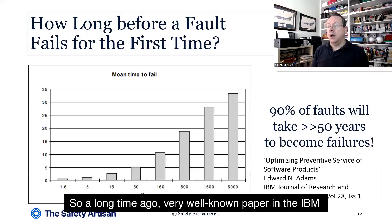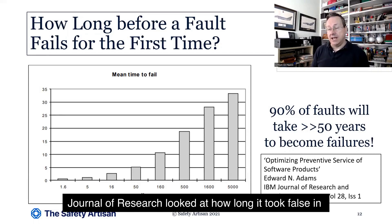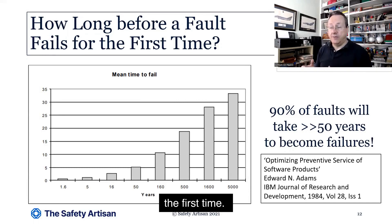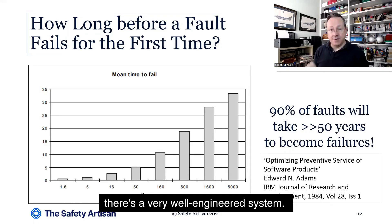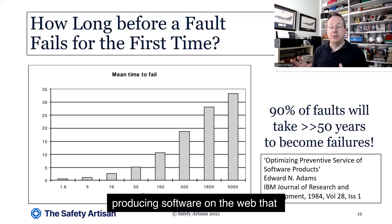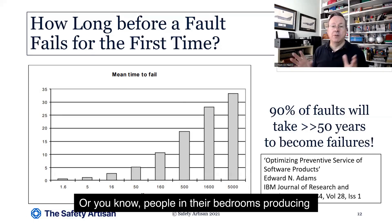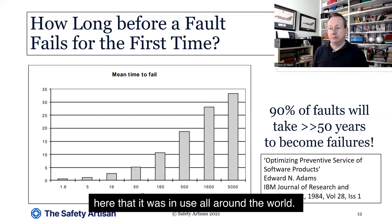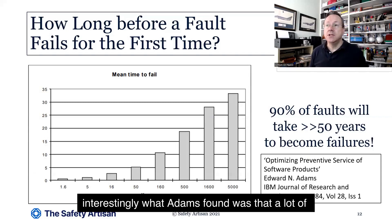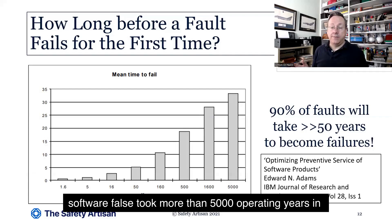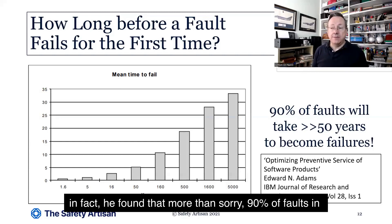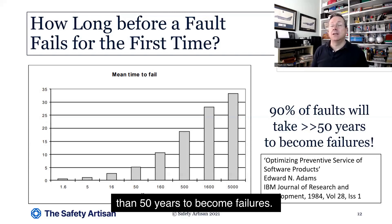A long time ago, a very well-known paper in the IBM Journal of Research looked at how long it took faults in IBM operating system software to become failures for the first time. Bear in mind, this is an IBM operating system — a very well-engineered system. We are not talking about cowboys producing software on the web, or people in their bedrooms producing apps. We're talking about a very sophisticated product in use all around the world. Interestingly, what Adams found was that a lot of software faults took more than 5,000 operating years to be revealed. In fact, more than 90% of faults in the software would take much more than 50 years to become failures.